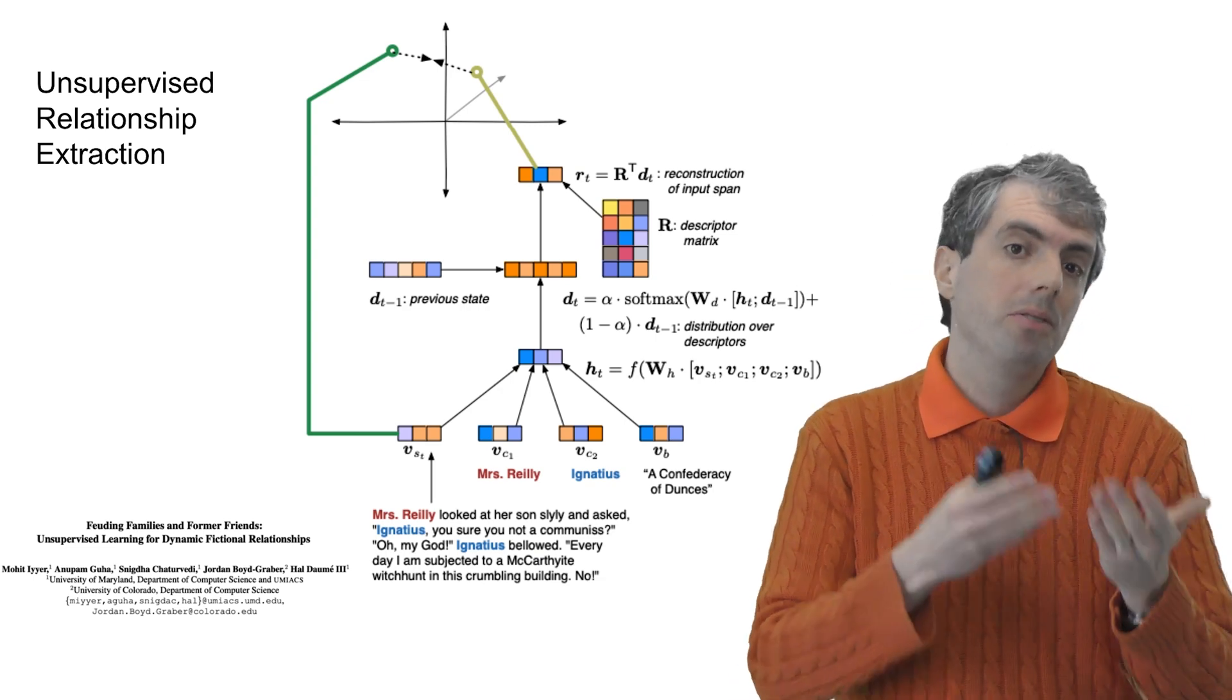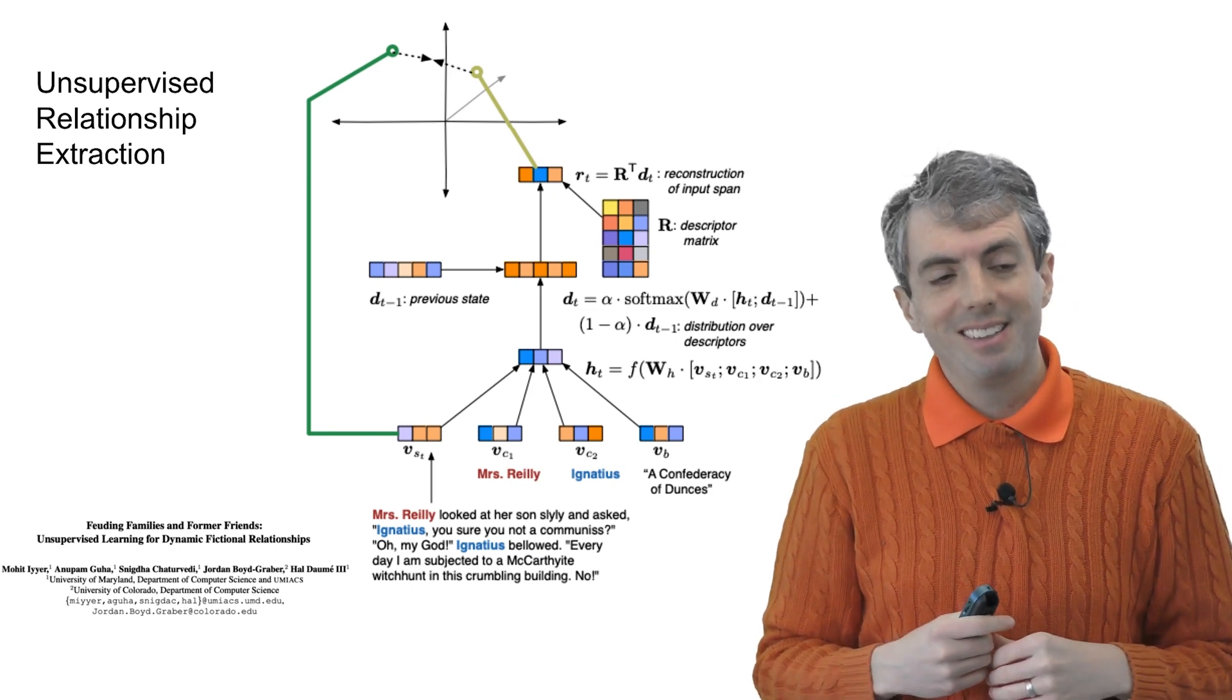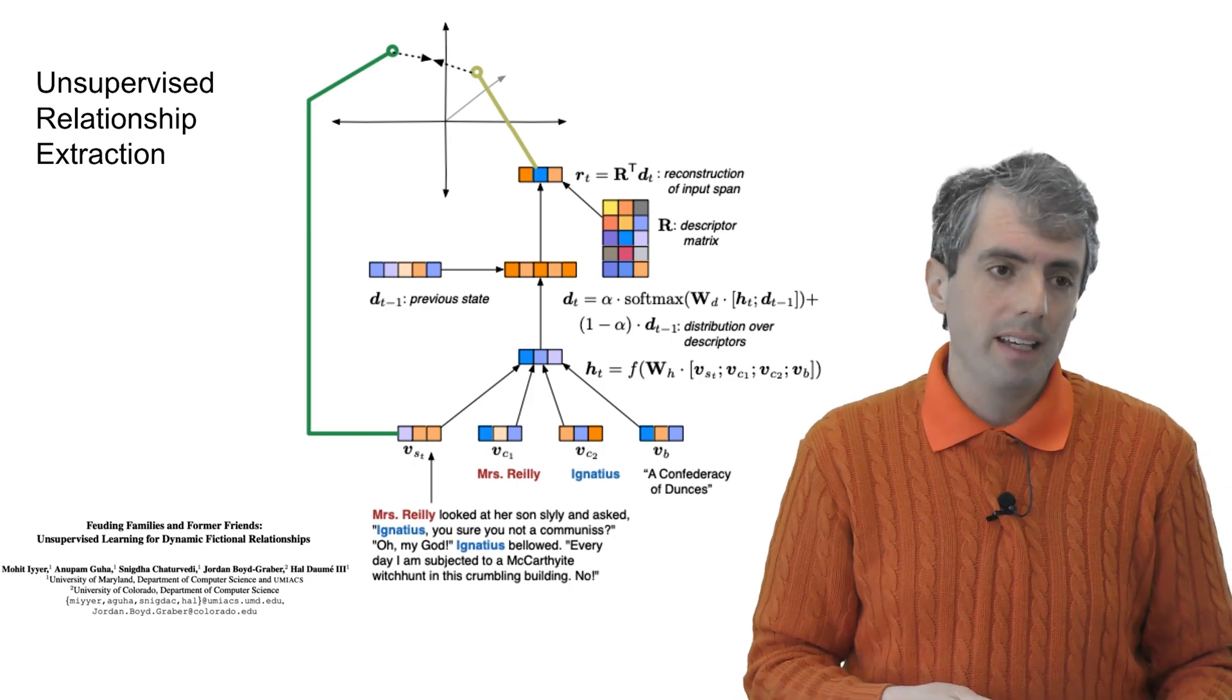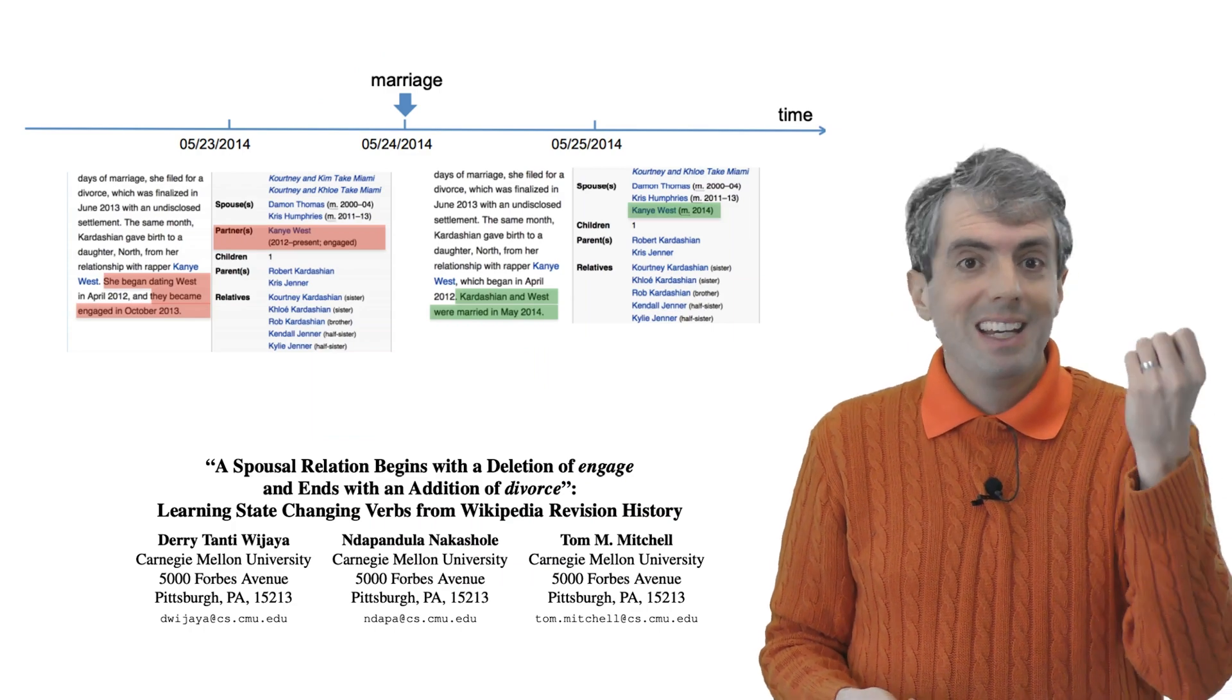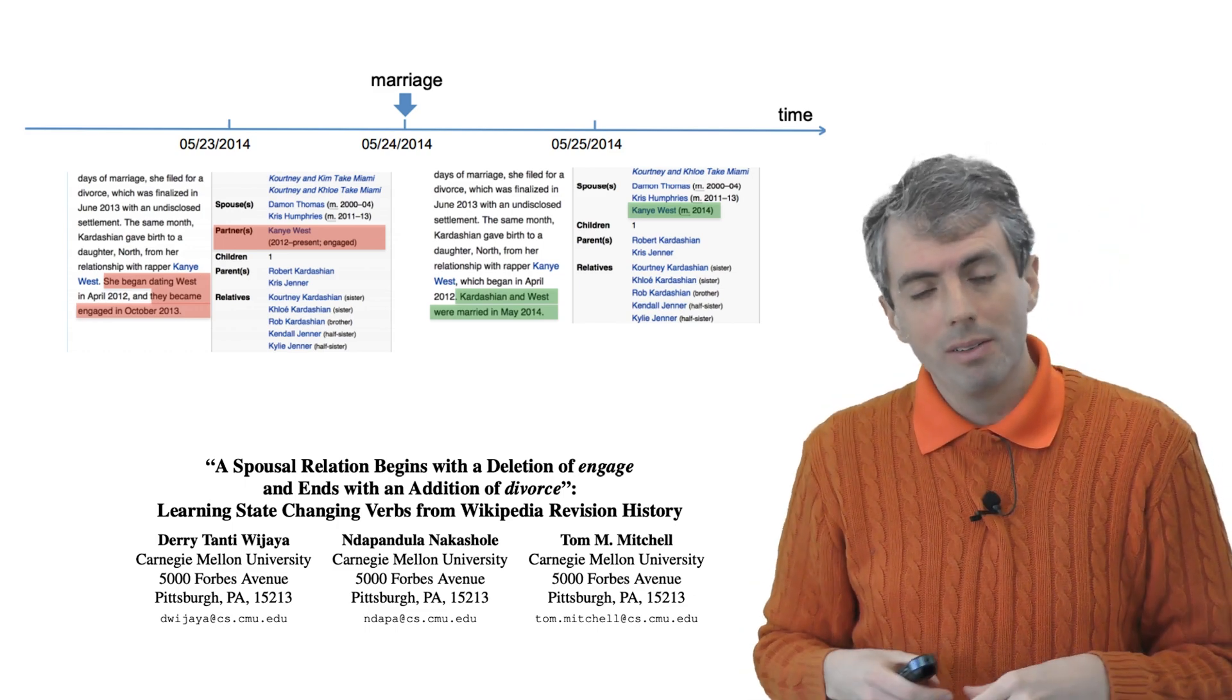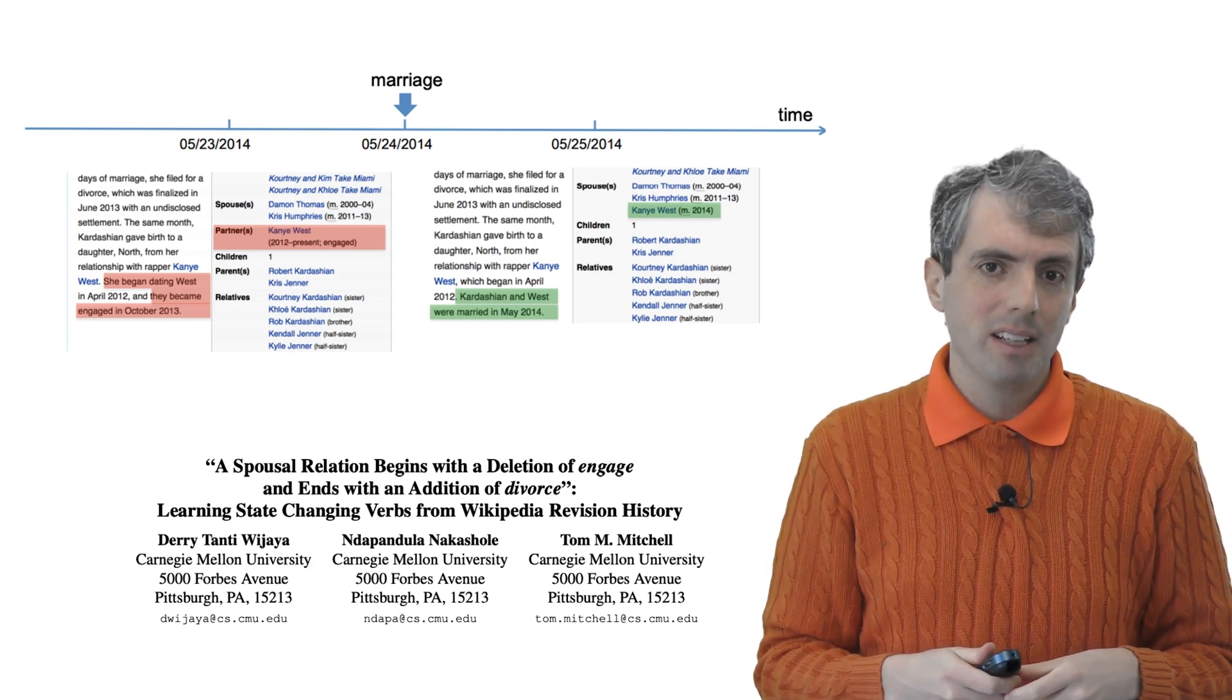One challenge with both supervised and unsupervised relationship mining is that relationships change. This is something Mohit and his collaborator Snigna looked at extensively in the unsupervised case. You can also get supervision from knowledge bases because those change over time. And this is more work from the Nell Project looking at how you can learn when relationships between entities change by looking at the edit record in Wikipedia.